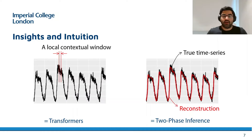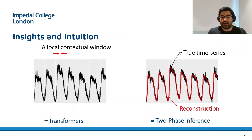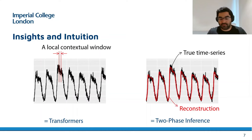For the first intuition, we use a transformer model that uses self-attention to make inference more or less agnostic to the size of the input time series. For the second intuition, we use a two-phase inference procedure where the first phase produces a rough reconstruction, and the second phase uses the deviation trace as an additional input to perform reconstruction again.